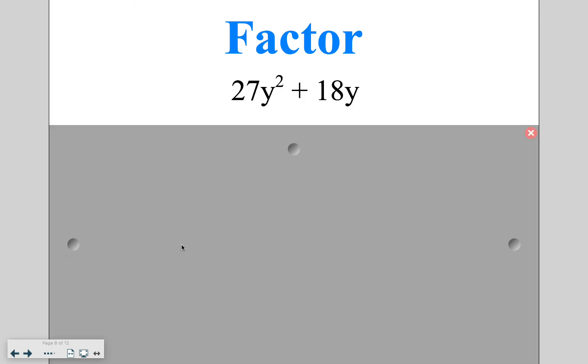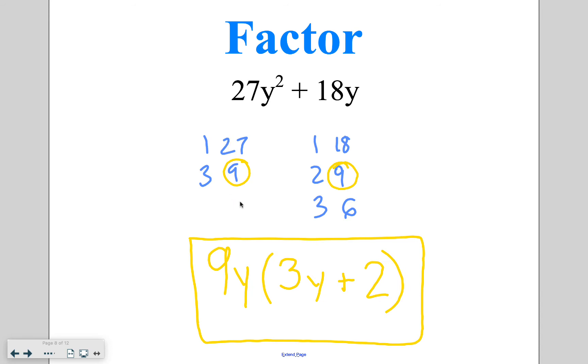Go ahead and try this one on your own. The 9 is our greatest factor here. I can take out just one of those Y's. So I'm left with 9Y times the quantity of 3Y plus 2.